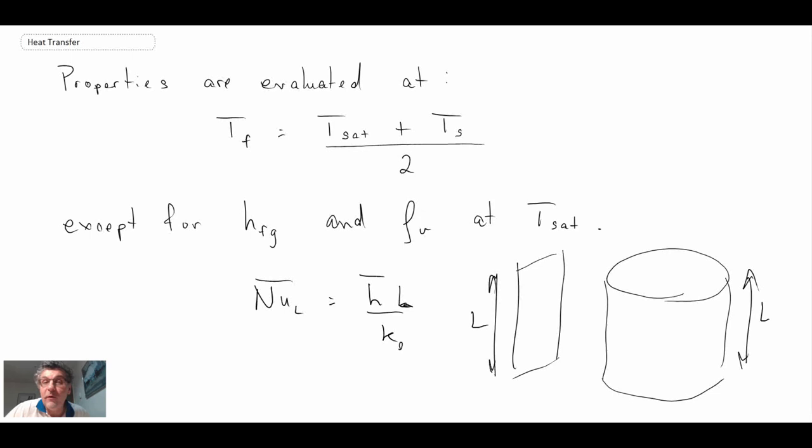What we're going to do in the next segment is we're going to look at correlations that, in a way, are based off of Nusselt's analysis, but they enable us to go to higher Reynolds numbers, going into the wavy regime, and then finally into the turbulent regime where you would have turbulent condensation in your film forming on the cooled surface.